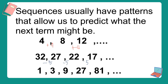Next naman, dito sa example na to: 1, 3, 9, 27, and 81. Since ang example na to ay mabilis ang pagtaas niya, it's a multiplication. Nag-multiply tayo ng certain number para makuha yung susunod na number. That is times 3. So, 1 times 3 is 3. 3 times 3 is equal to 9. And 9 times 3 is equal to 27. Ganun lang ang paghanap ng pattern sa isang sequence.